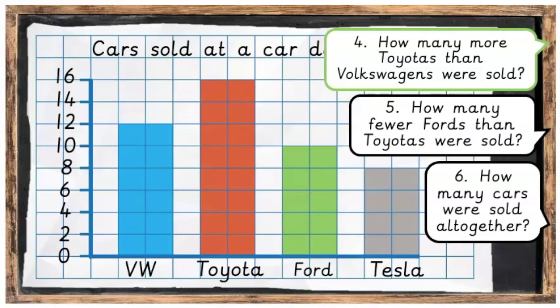Question 4: How many more Toyotas than Volkswagens were sold? If we look here, going from the Toyotas over to the Volkswagen and then count in 2s — 2, 4 — we'll see that there are 4 more Toyotas than Volkswagens sold, because the difference is 4.